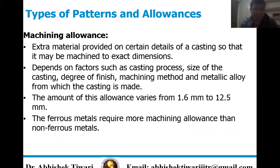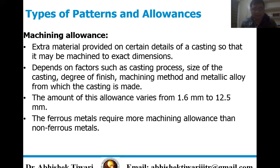Then we have machining allowance — extra material provided on certain details of casting so that it may be machined to exact dimensions. It depends on factors such as casting process, size of casting, degree of finish, machining method, and the metallic alloy from which the casting is made. The amount of this allowance varies from 1.6 mm to 12.5 mm. Ferrous metals require more machining allowance than non-ferrous metals.